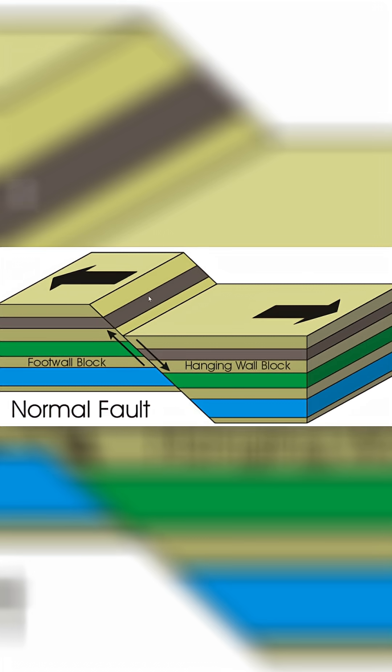And so this creates an interesting stepped pattern in the landscape. But not only this, normal faulting can create horsts and grabens.